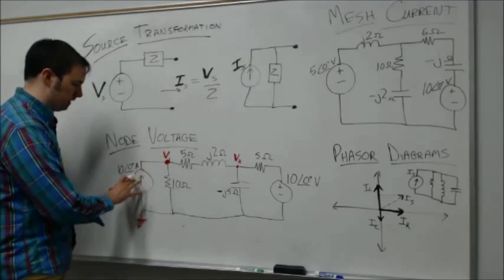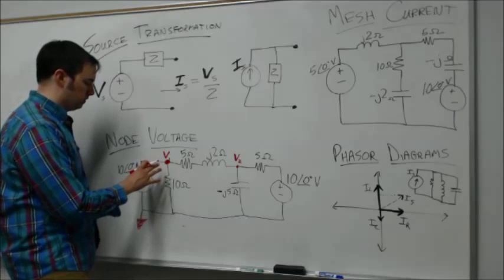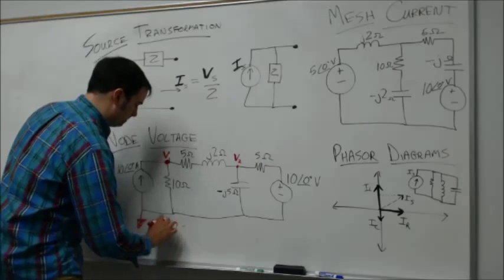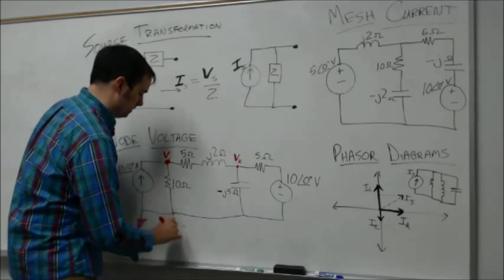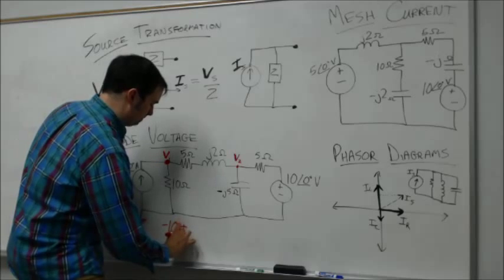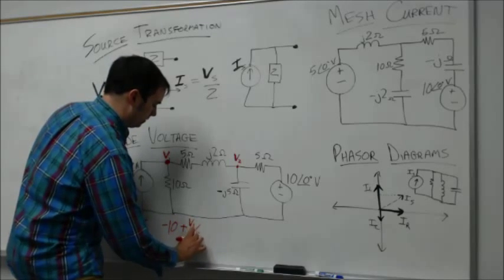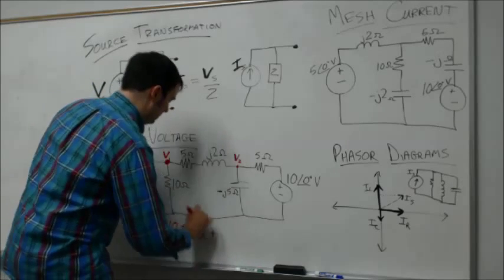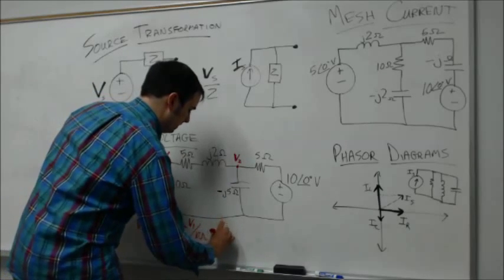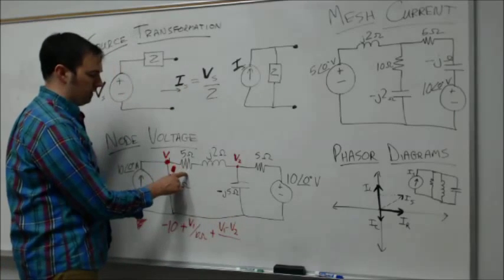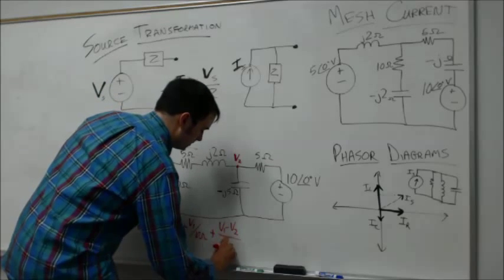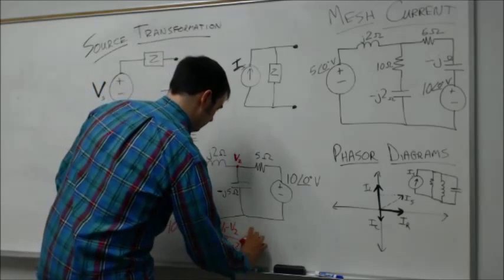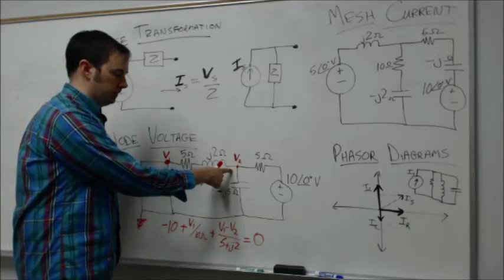For V1, we sum up the currents coming into the node. Any quantities coming into the node count as negative, so we have minus 10 amps from the current source, then the current going out through the middle branch V1 over 10 ohms, and through the other branch V1 minus V2 over 5 plus j2, the total complex impedance for that branch, which equals zero.